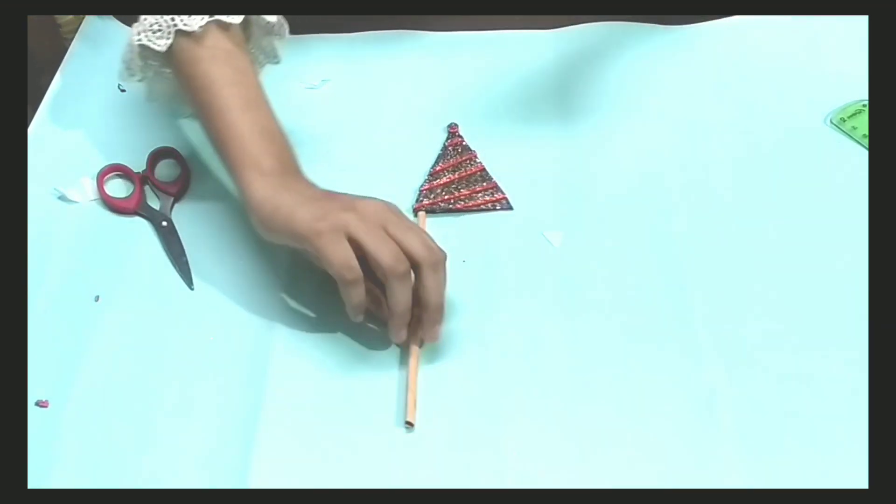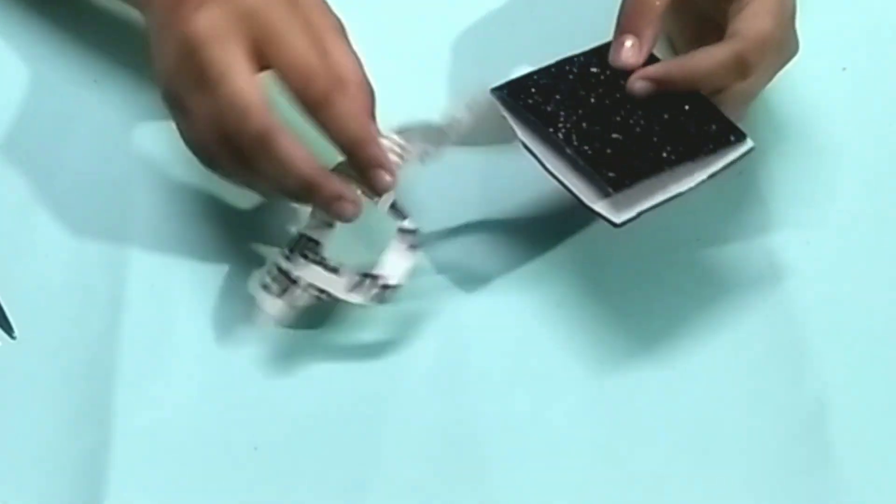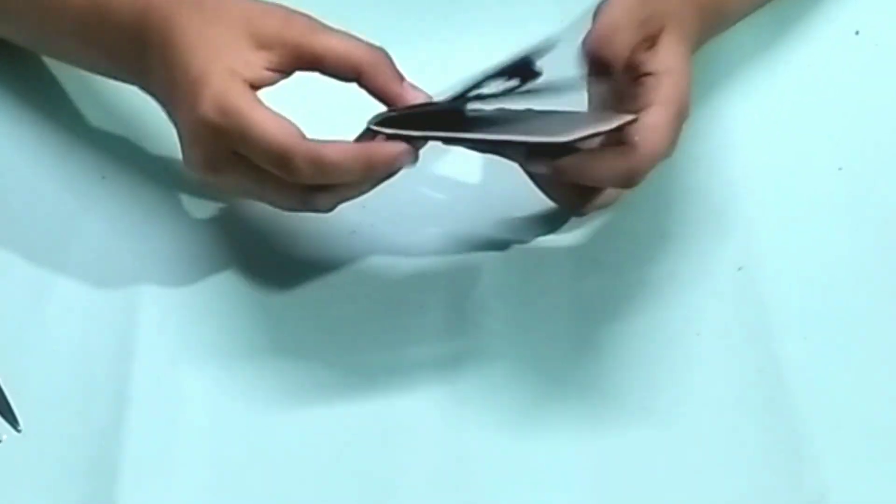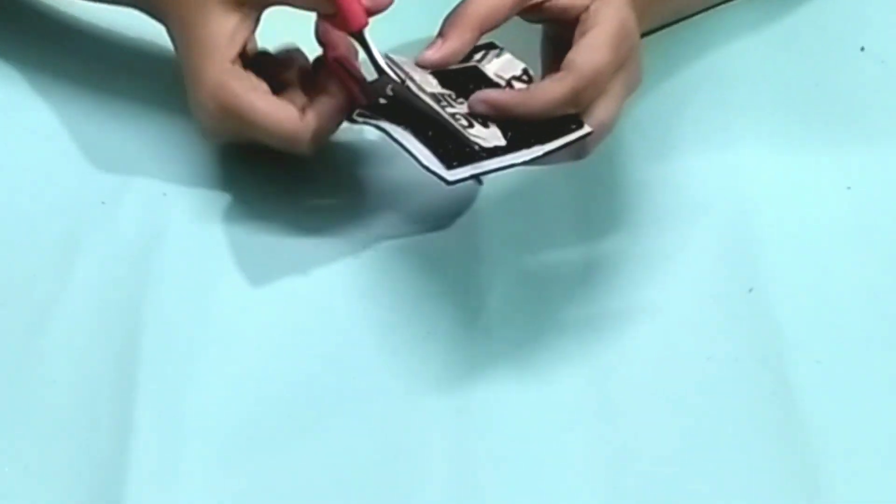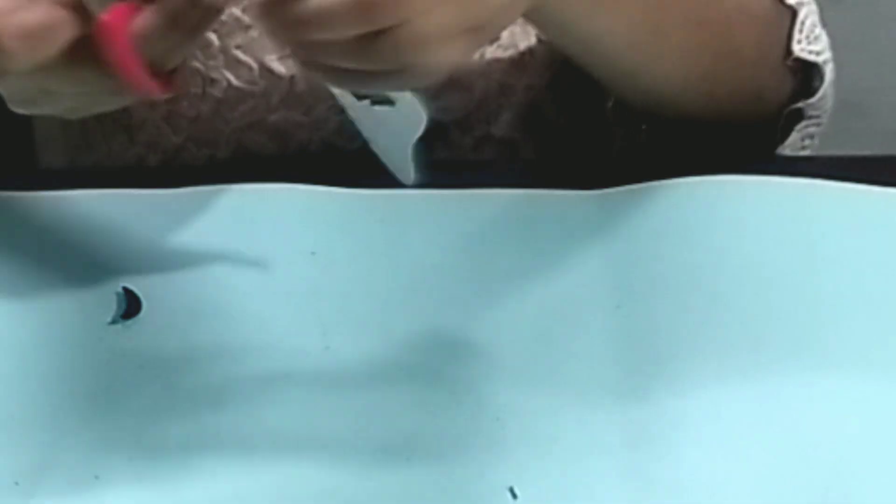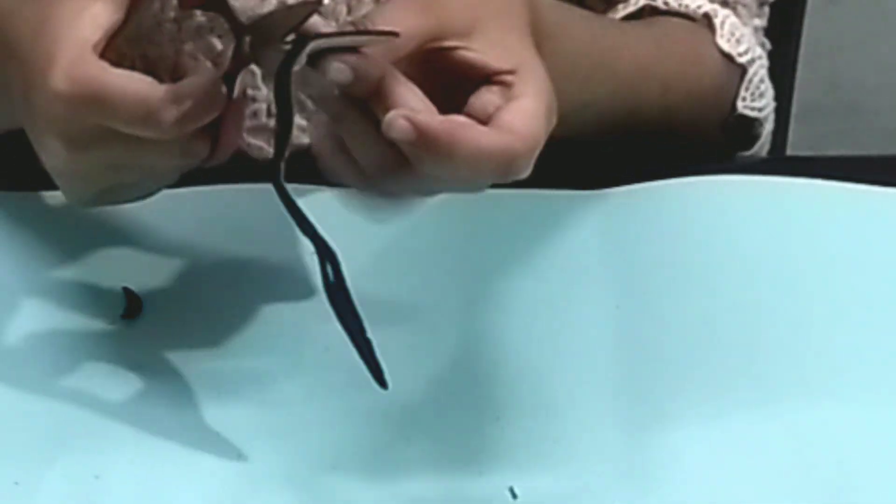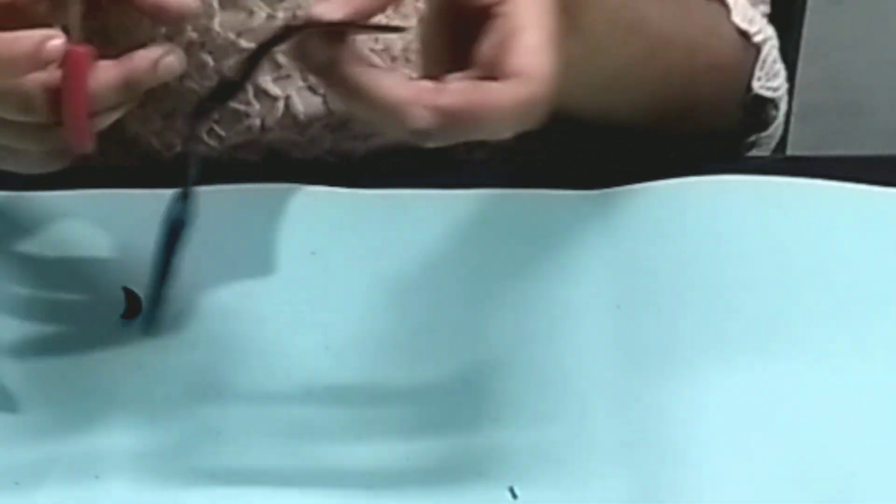Now let's make some glasses. For that, fold it into half and fold the cutout too. Then cut it according to the cutout, then cut it from the middle.